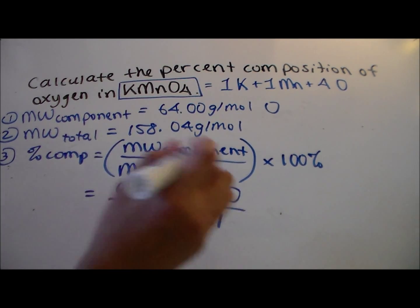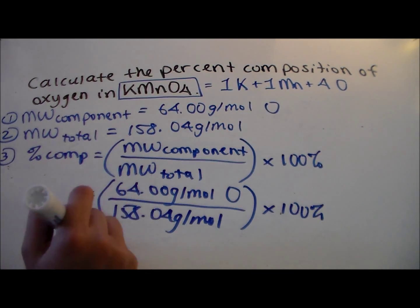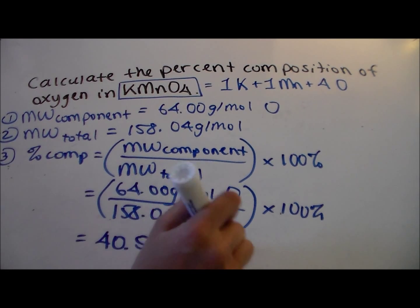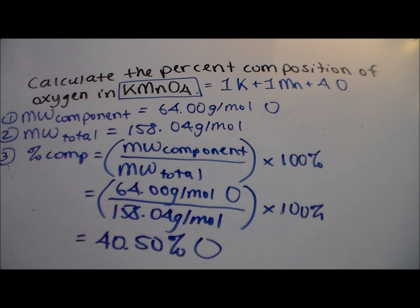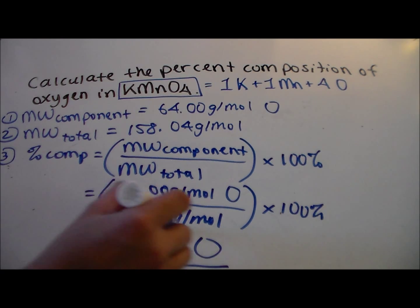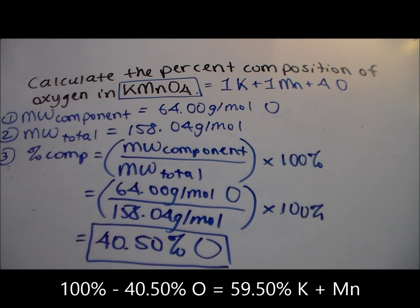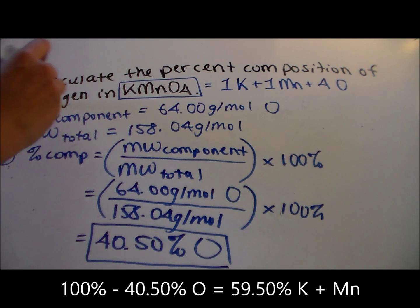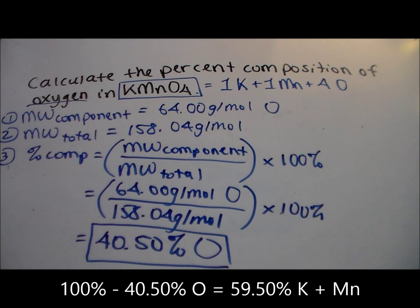Plugging in our values, we have 64 grams per mole on top, 158.04 grams per mole at the bottom, multiplying by 100%, and we get 40.50% oxygen. So KMnO4 consists of 40.50% oxygen. Simple math tells us that 59.50% of KMnO4 then consists of potassium and manganese combined.